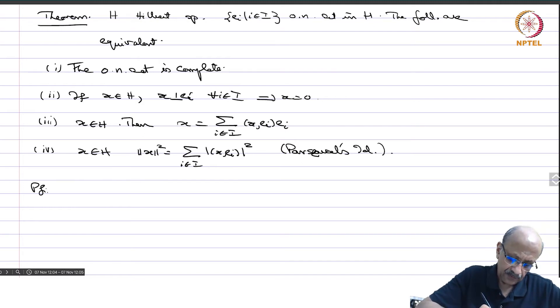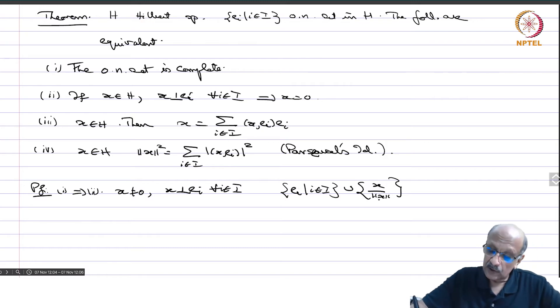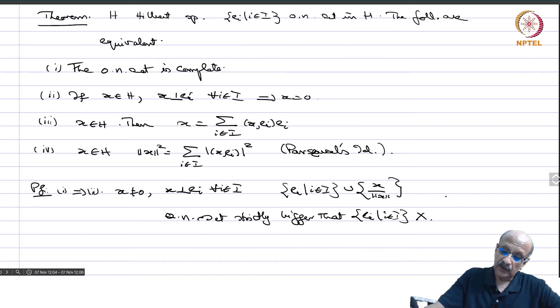Proof 1 implies 2. If x is not 0 but x orthogonal to EI for all I in I, then you take EI, I in I union X by norm x. This is again a unit vector and it is orthogonal to all of these. So this is an orthonormal set strictly bigger than EI, I in I and that is a contradiction because we know that it is complete and therefore this is maximal. You cannot have something bigger.